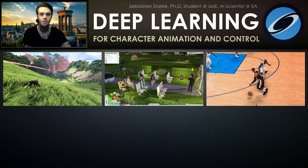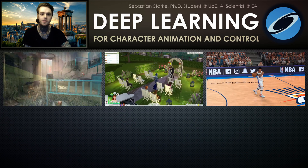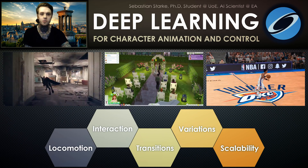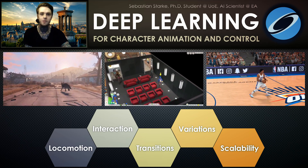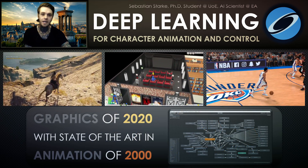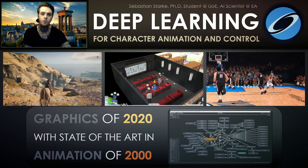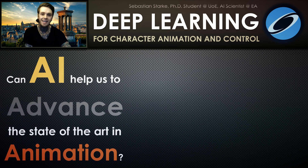Creating character movements for AAA games is challenging and achieving production-ready quality is not straightforward. Managing time and resources to create high-quality animations and being able to ship all the content with the game is often a compromise, leaving us with a state-of-the-art in character animation that unfortunately has not progressed as fast. So the question was: can AI help us to advance the state-of-the-art in character animation?